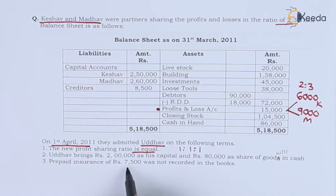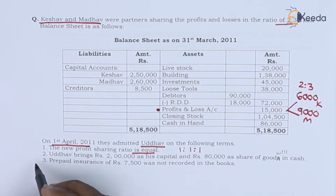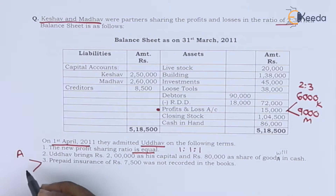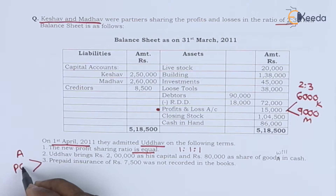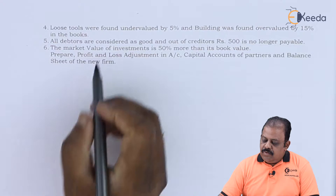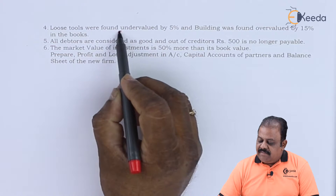Prepaid insurance of 7,500 is not recorded in the books. This will be recorded as an asset, with the second effect being a credit to the profit and loss adjustment account (revaluation account). Loose tools were found undervalued by 5%, so we need to add the undervalued amount, with the second effect being a credit to the profit and loss adjustment account.